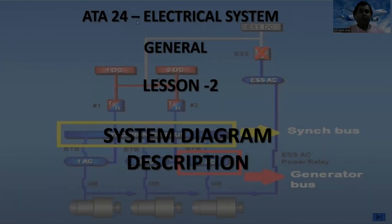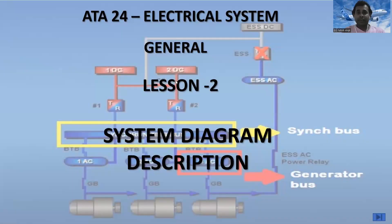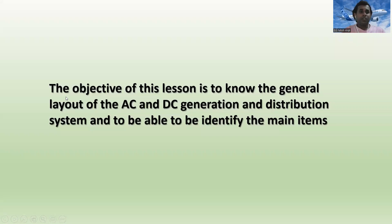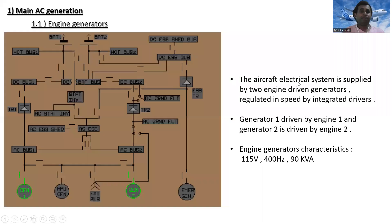Today is ATA Chapter 24, Electrical System General, lesson number two. We are going to discuss system diagrams and descriptions. The lesson content covers: main AC generation, emergency generator, AC transfer, AC distribution, DC generation, DC distribution, batteries, static inverter, ground flight buses, galleys, and main electrical configuration. The objective is to know the general layout of the AC and DC generation and distribution system and to identify the main items.